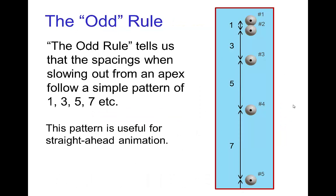For straight ahead animation of a ball drop, in another tutorial it was mentioned how you could use the odd rule, and the odd rule told you that there was a simple pattern for the spacings as the motion slows out from the apex. The odd rule is not just for falling motion — there are lots of cases where slowing out or slowing in follows the odd rule, and this is particularly useful for straight ahead animation.